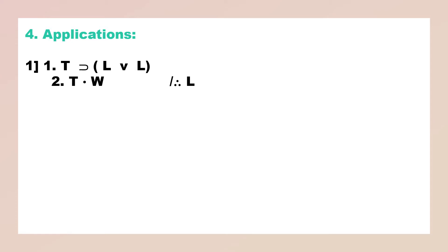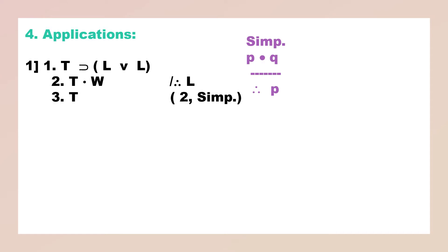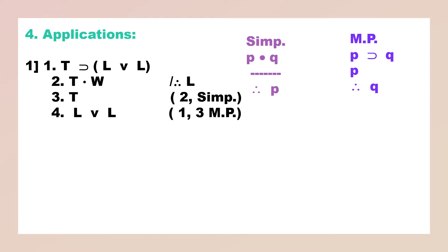Let us see the applications. We have T implies L∨L, and T·W, therefore L. Now suppose we want the consequent — what should we do? We can apply this rule to part of the statement. Either you derive L∨L and apply the rule of Tautology, or you can apply the rule of Tautology first. You can simplify T and then use the rule of M.T. So, simplification of T, then apply the rule of M.T., and you will get T implies L∨L, and T, therefore L∨L.